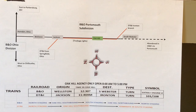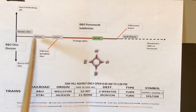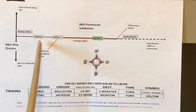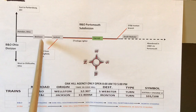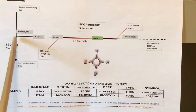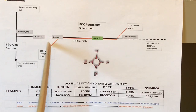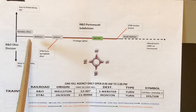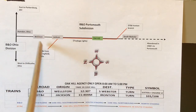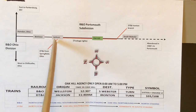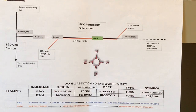If there was a lot of traffic, a turn would operate out of Chillicothe to Wellston to pick up and drop off cars. That way the Portsmouth job would not have to run up to Hampton to do anything. There were several industries in Wellston that had some service. Wellston and Jackson both had some industries at the time. Jackson actually had a couple of steel mills at one time, but by the time I'm modeling they were long gone.